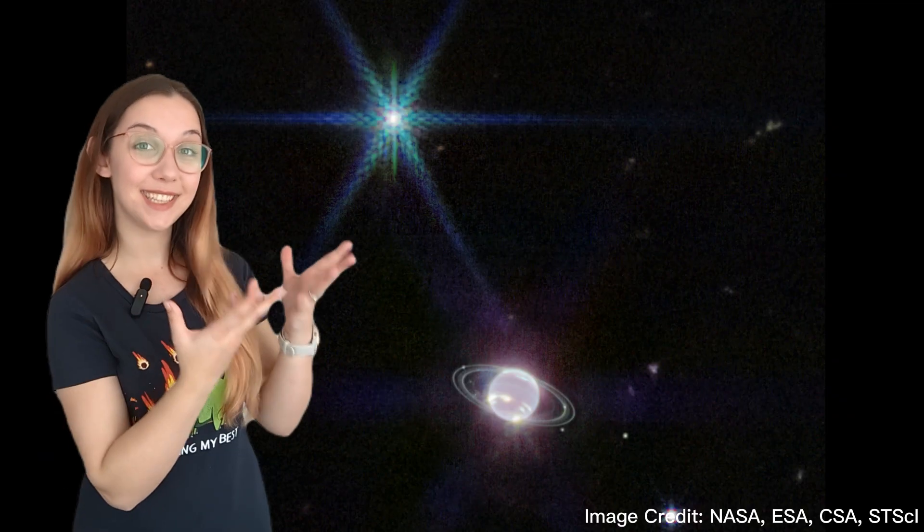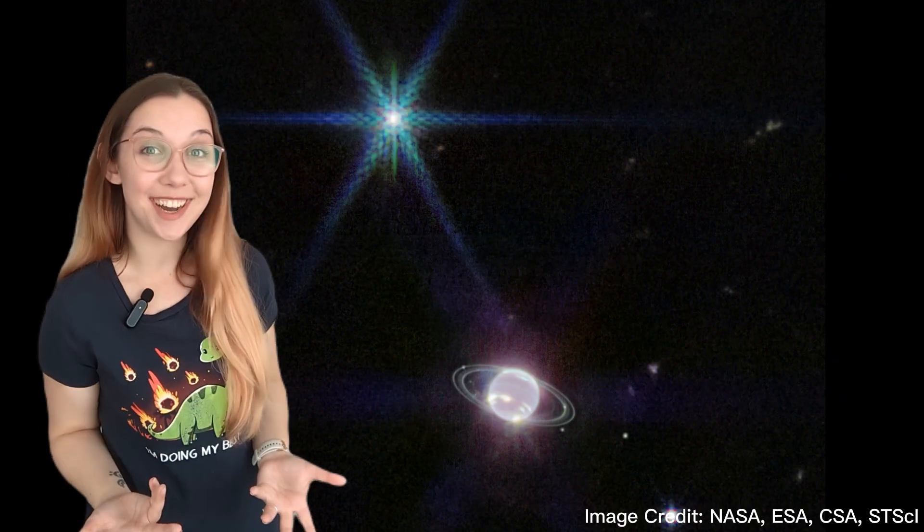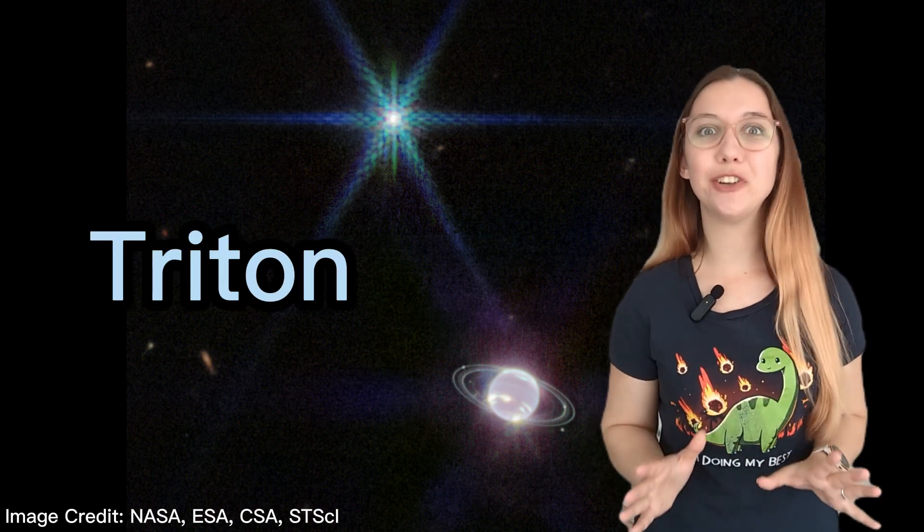It's not this one. It's this one, the one that kind of looks like a star. This is Neptune's largest moon, Triton, which wildly outshines the planet.